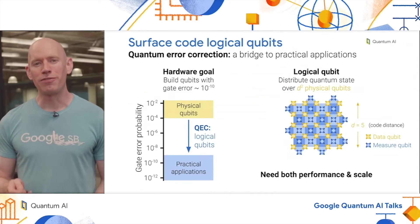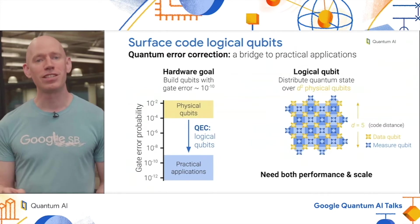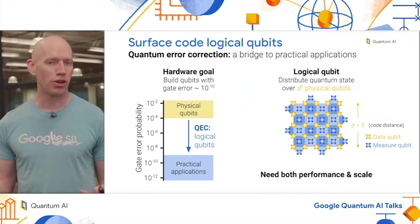Getting this to work requires a very high level of performance because we're adding a bunch of extra qubits and extra operations, a lot of opportunities for errors. If the underlying qubits aren't good enough, then our bridge would crumble under its own weight. At the same time, given sufficient performance, we need to operate at very large scale, because as we scale up the code to larger sizes, we can exponentially reduce the logical error probability to cross this chasm.